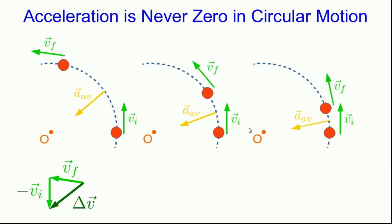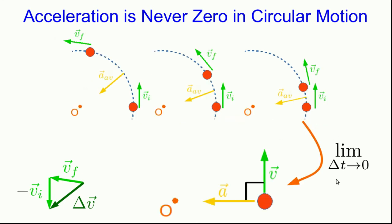Well, now let's look at smaller and smaller time intervals. And you see that average acceleration tipping like this. And so in the limit as delta t goes to zero, the acceleration points this way straight towards the center perpendicular to the velocity vector.